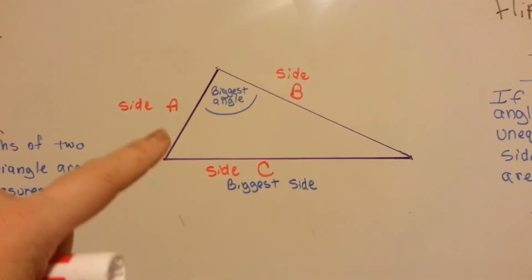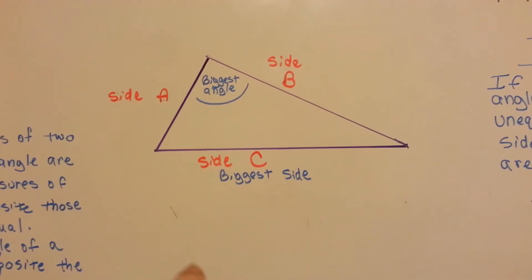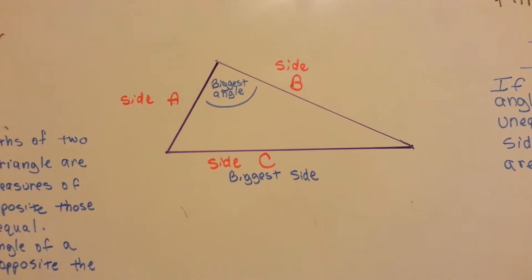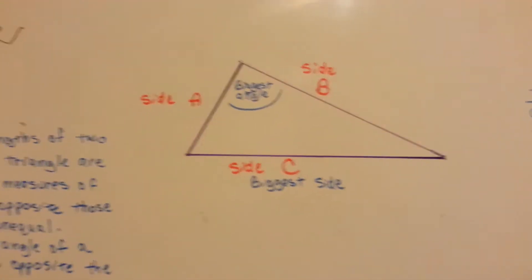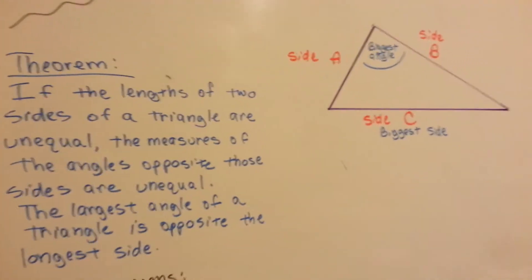We have a triangle where these sides are not equal, and there's a really big angle here, a really long side here, and let's see what the theorem says. Maybe the picture will help.